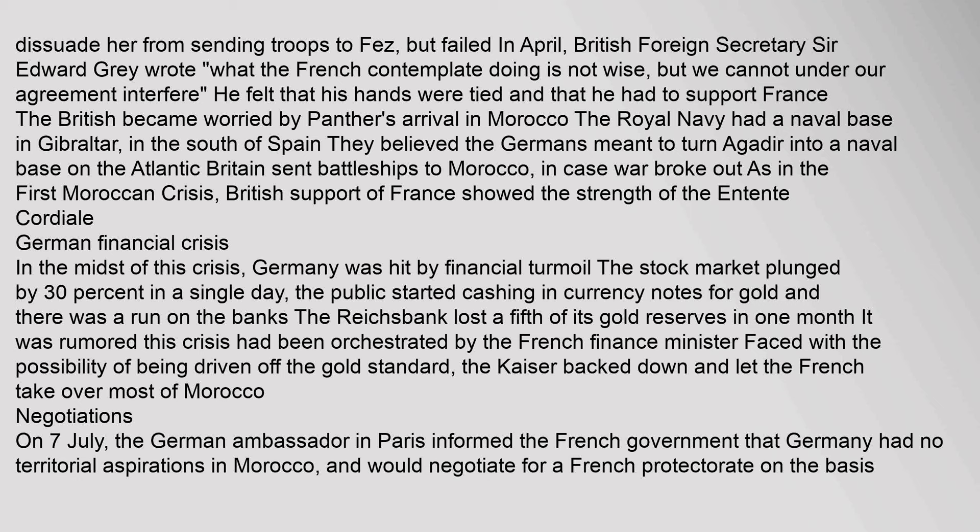By 4 November, Franco-German negotiations on the Treaty of Fez had led to a convention under which Germany accepted France's position in Morocco in return for territory in the French Equatorial African colony of Middle Congo, now the Republic of the Congo.